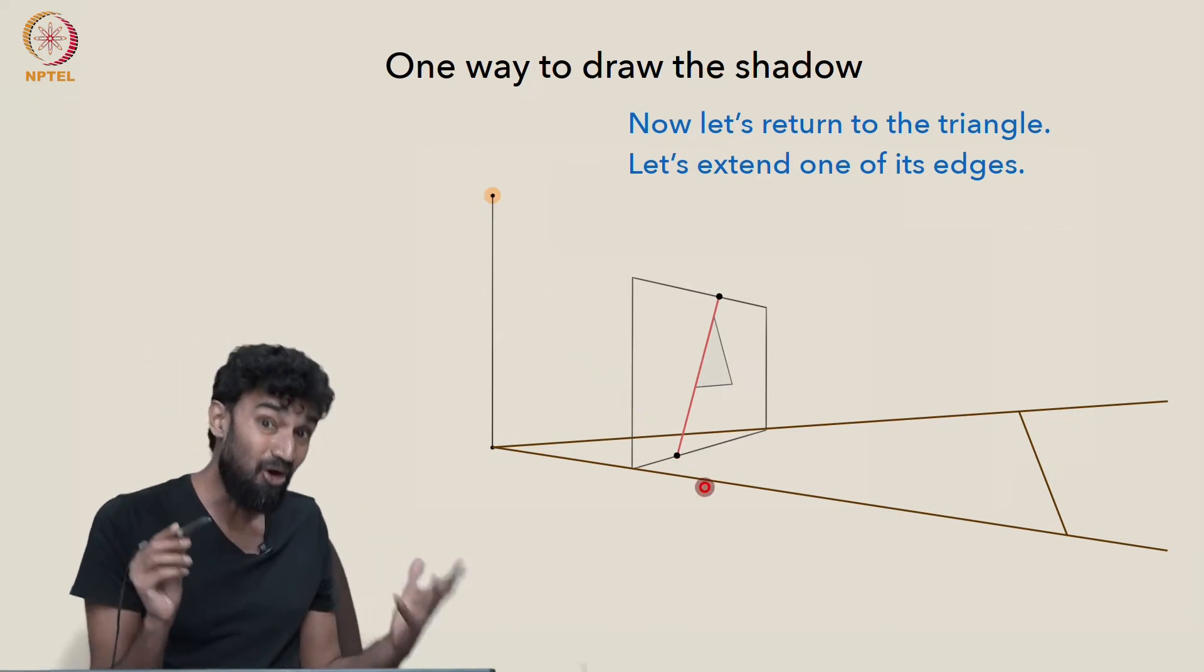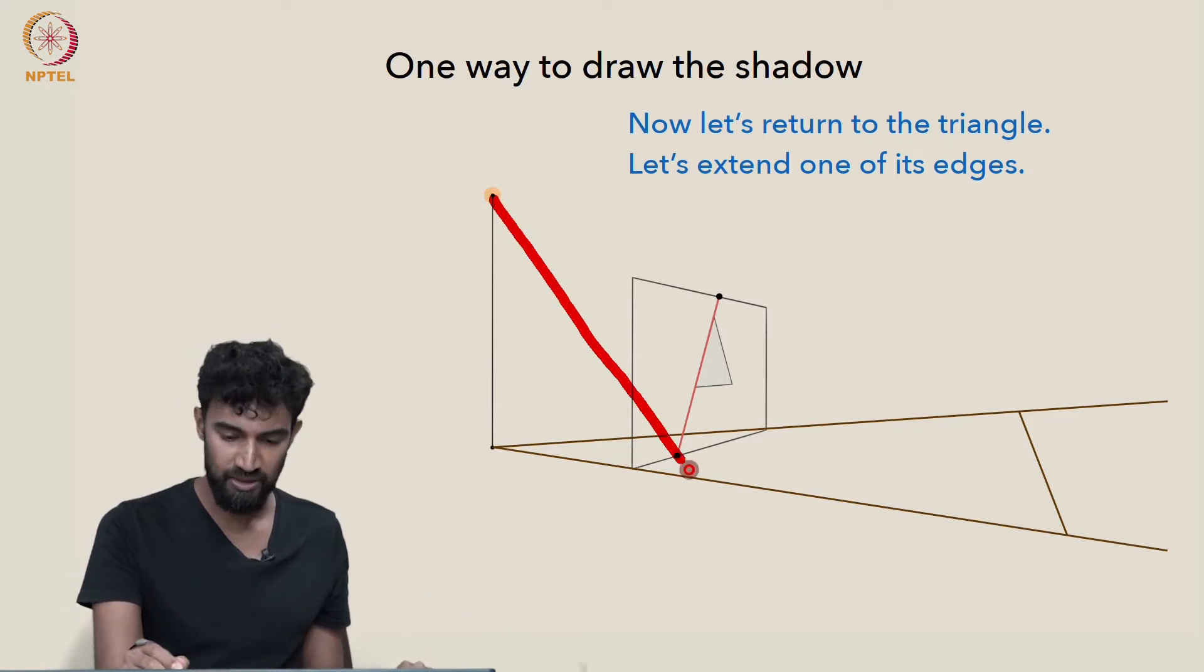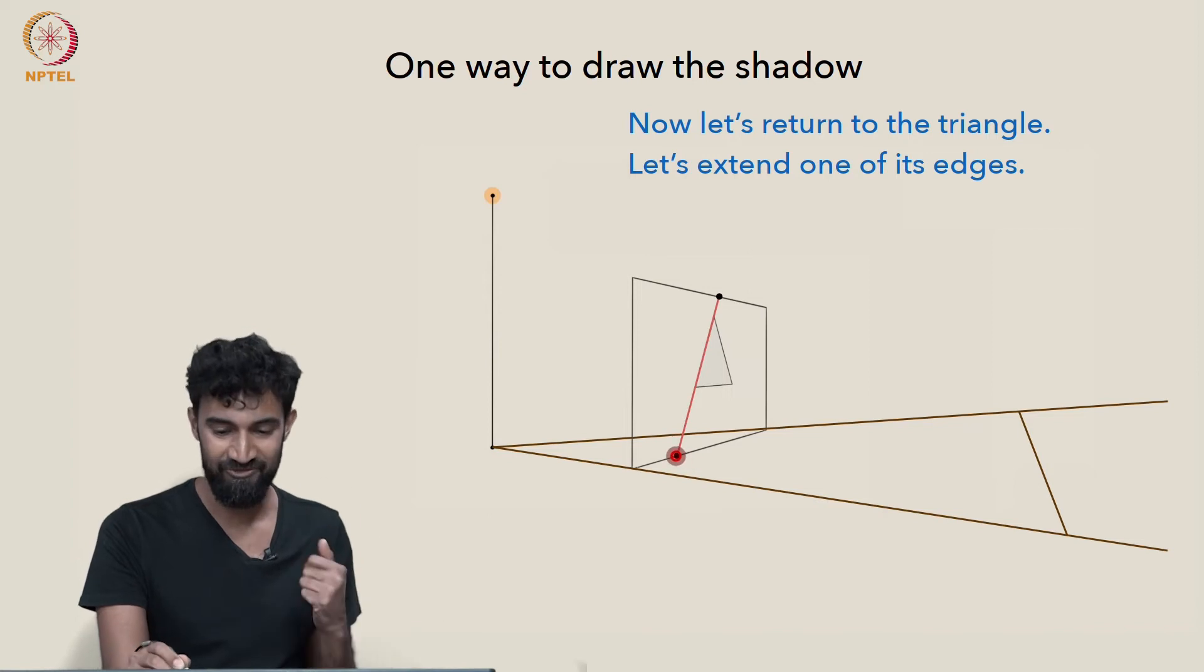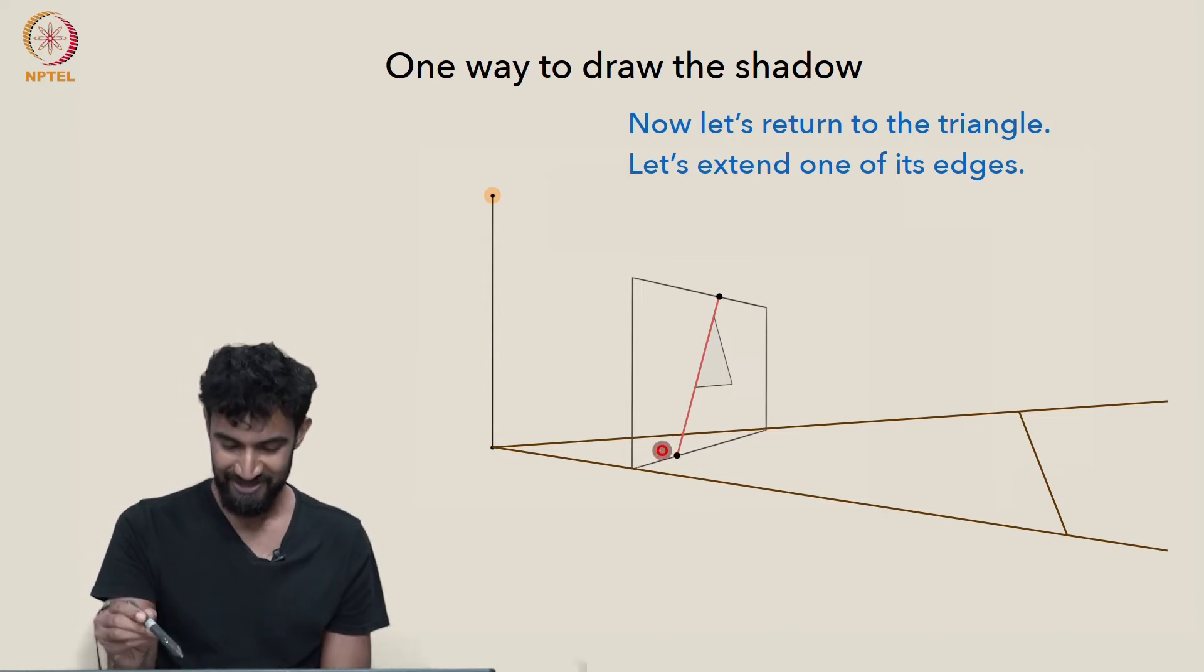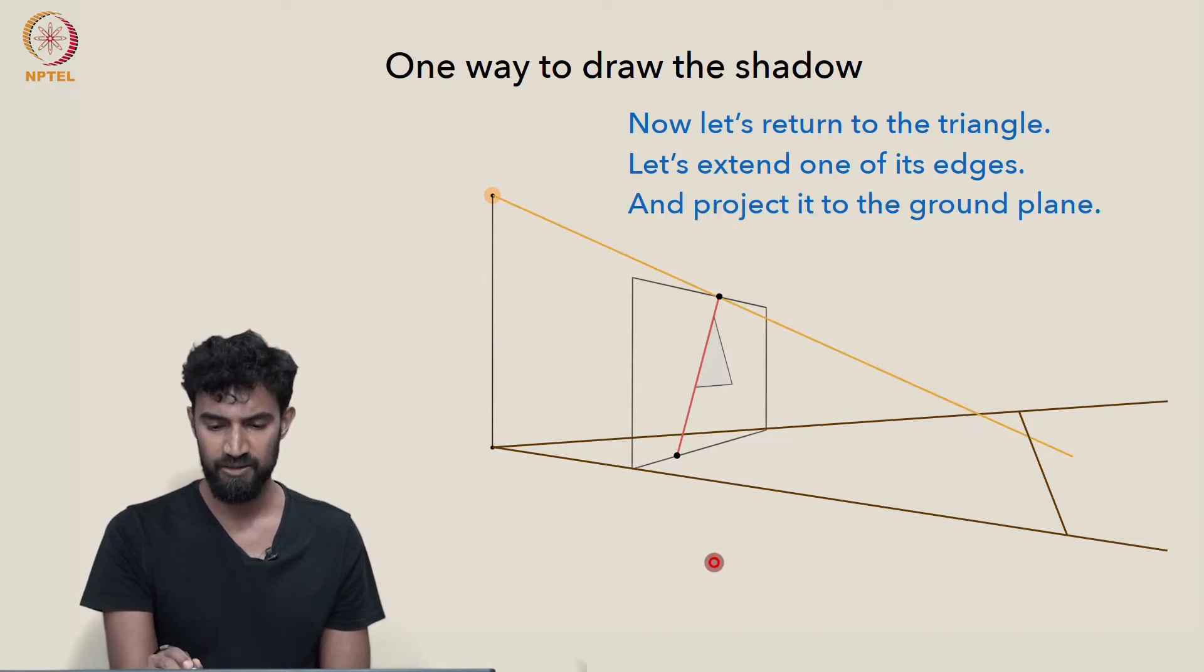Well, it's already on the ground. So its shadow is just going to be itself. That point is going to project to itself. So we already know where that point goes to. What about this point up here? When we project that to the ground plane, where does it go? Well, we already know that this line goes to this line. So this point of intersection of the two lines goes to this point of intersection here.